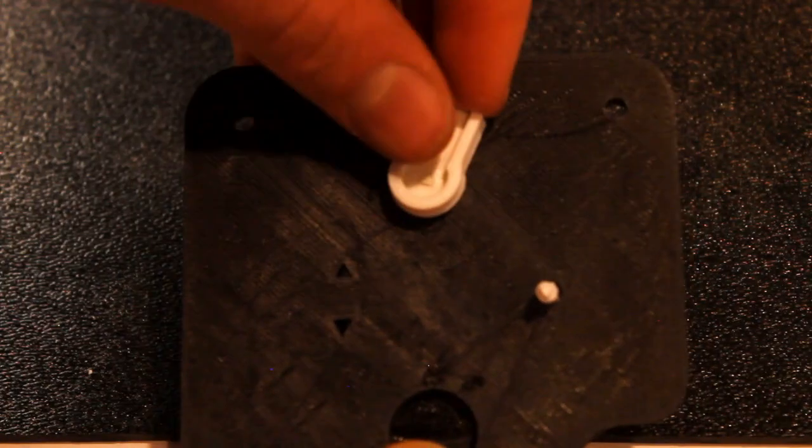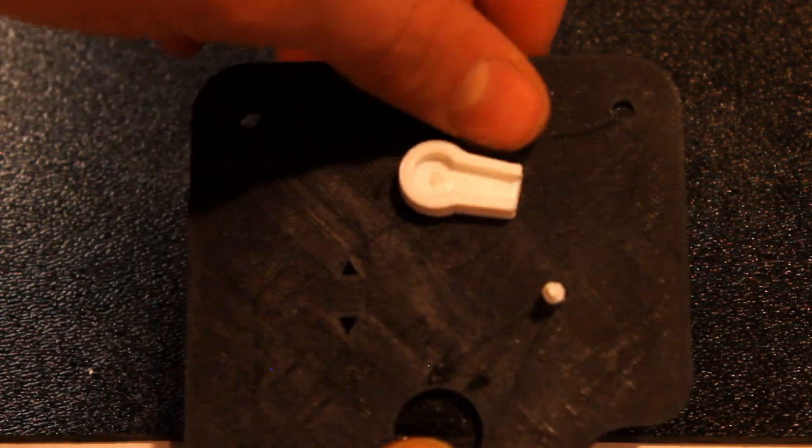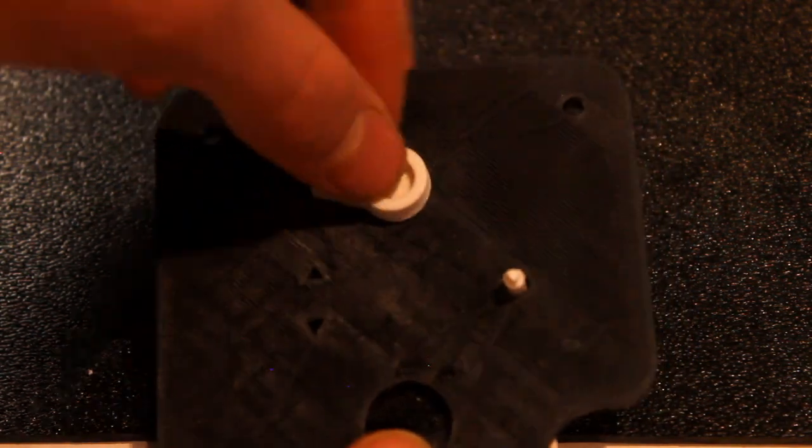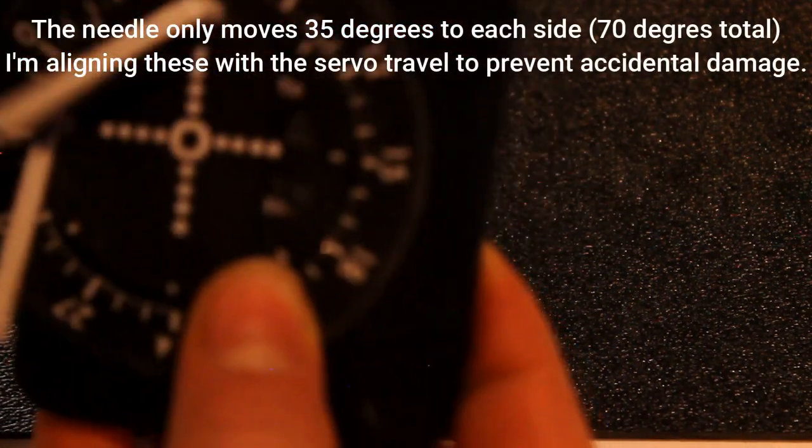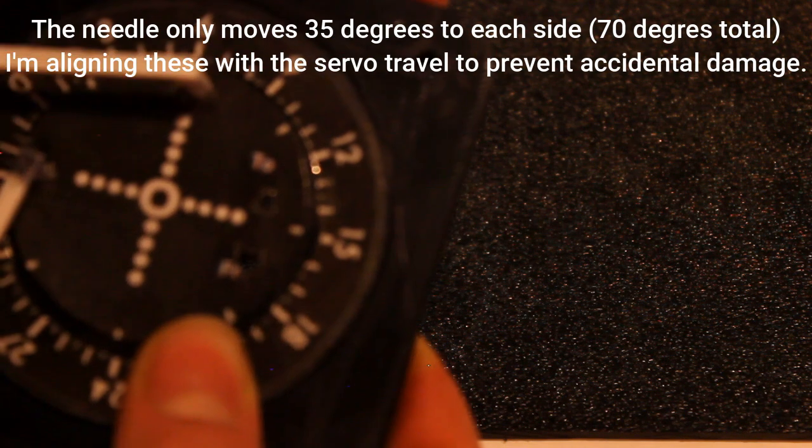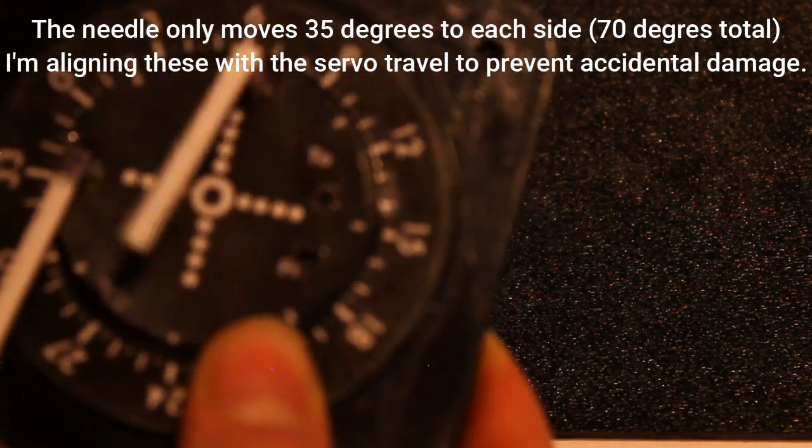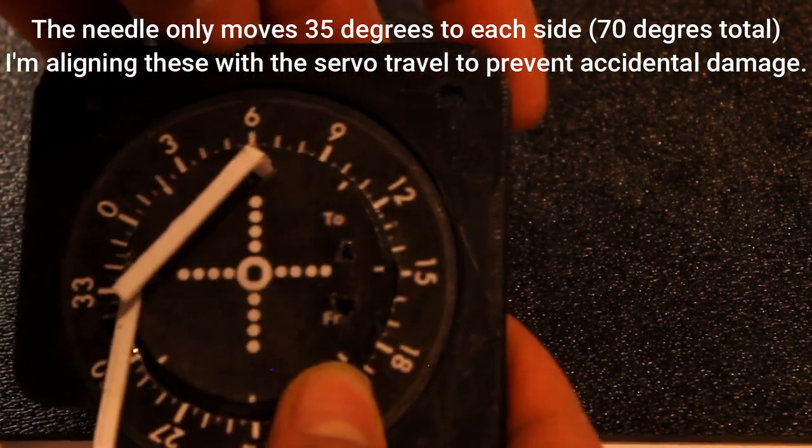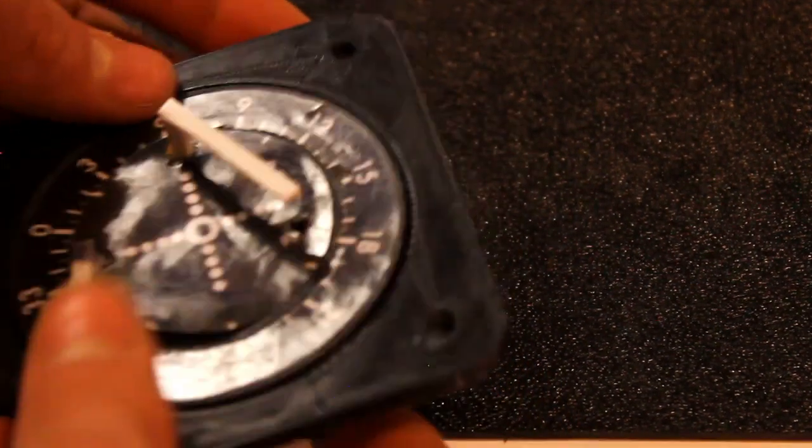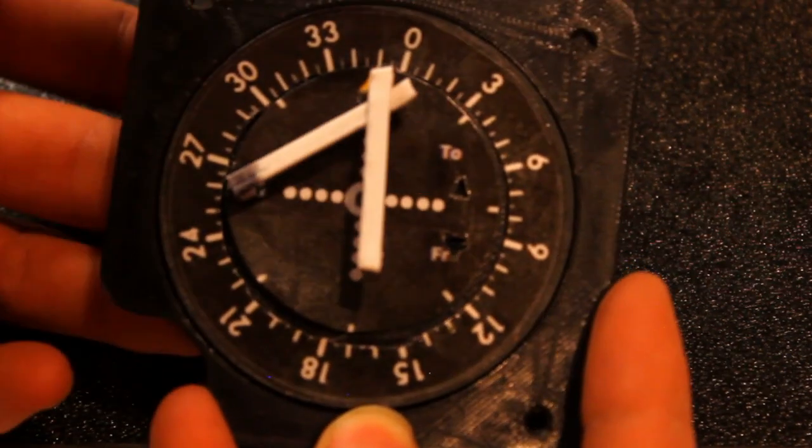You're also going to want to make sure that the 180 degrees of rotation that the servo has aligns with the 180 degrees of your VOR. So from there to there, it's within the 180 degrees. So we're good. We'll do the same step with the horizontal needle. Now it will look like this.